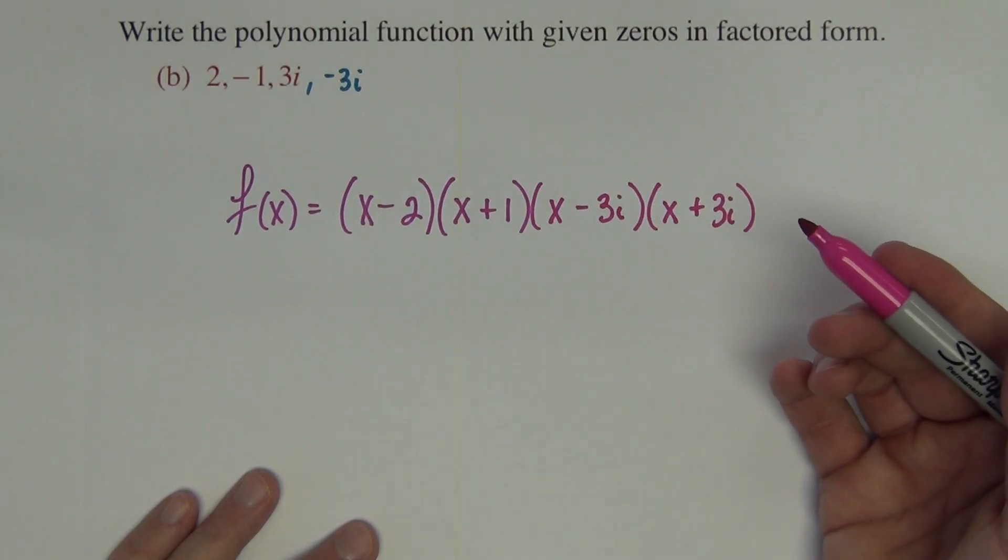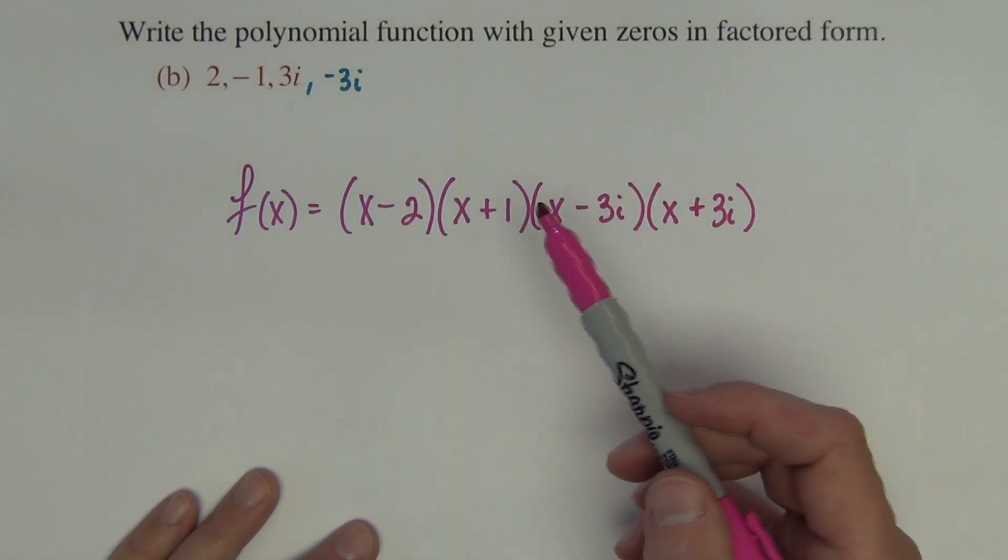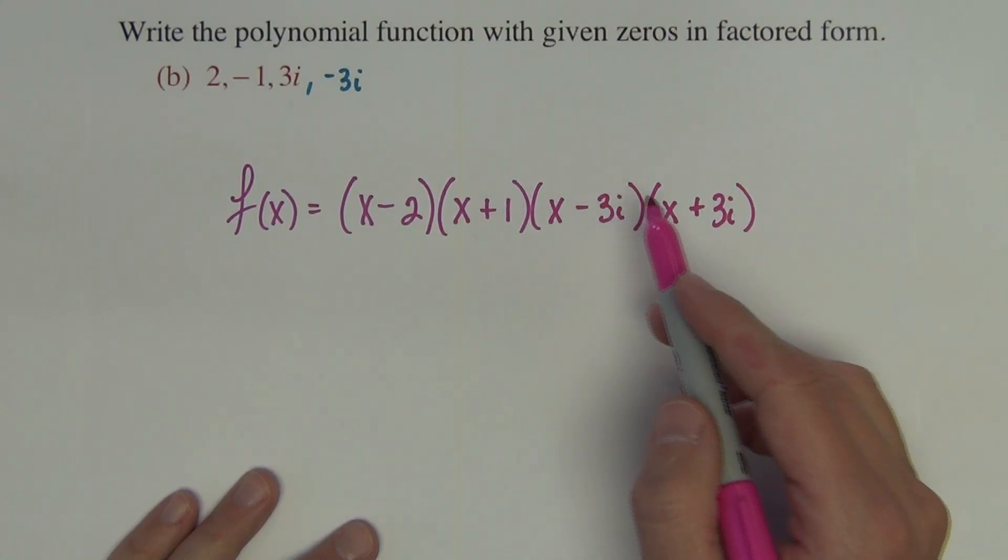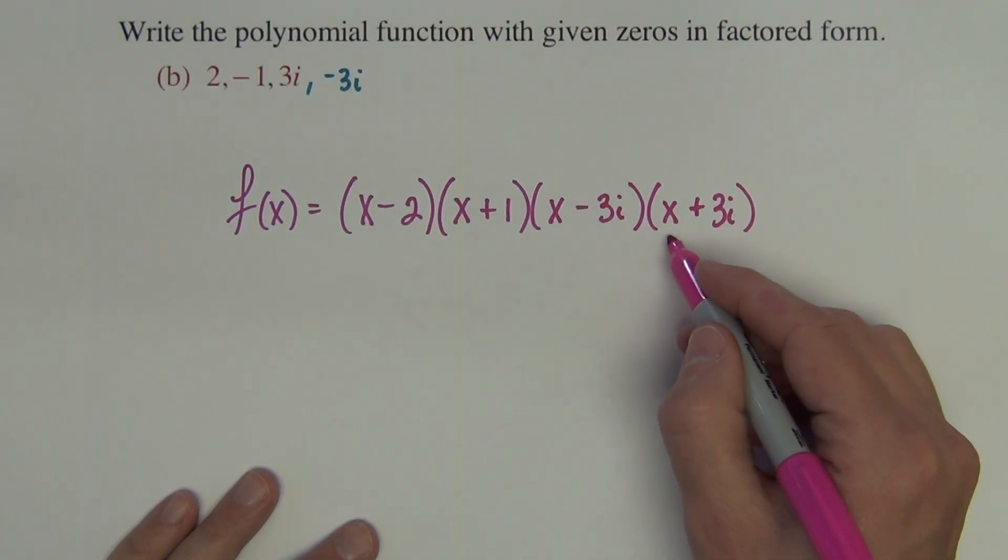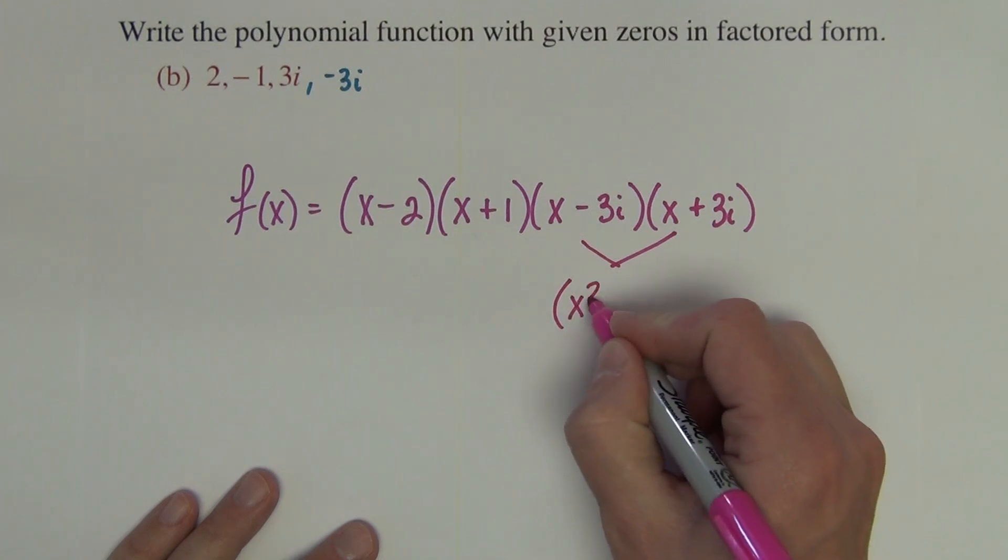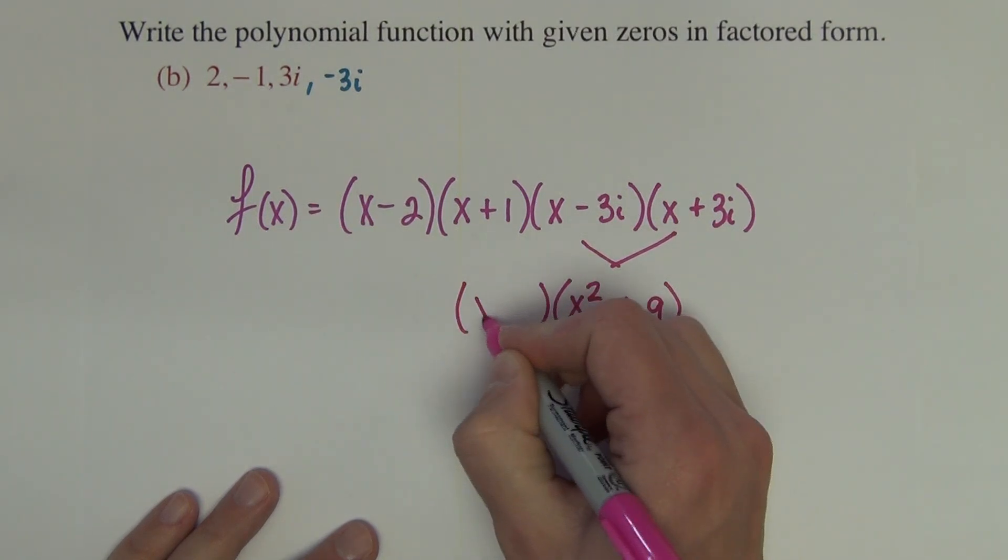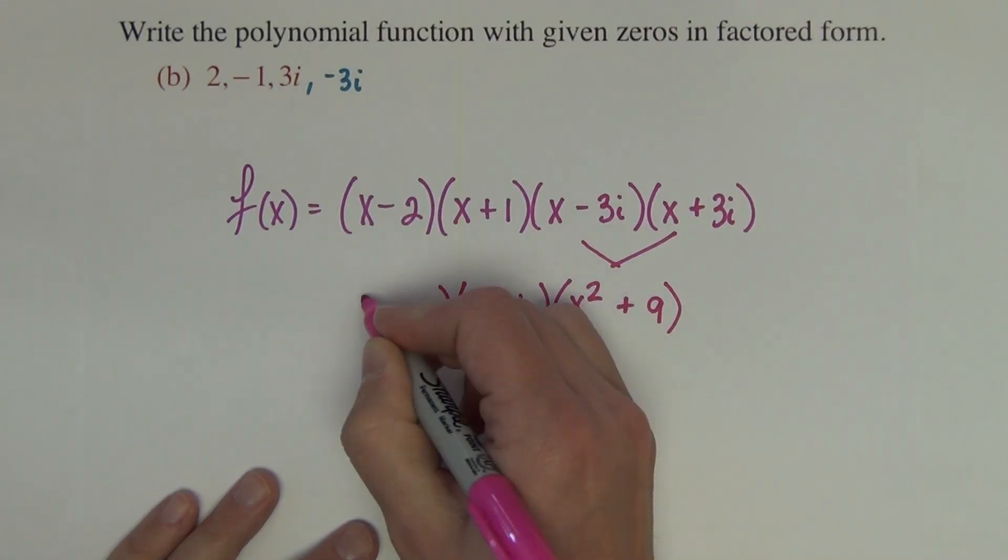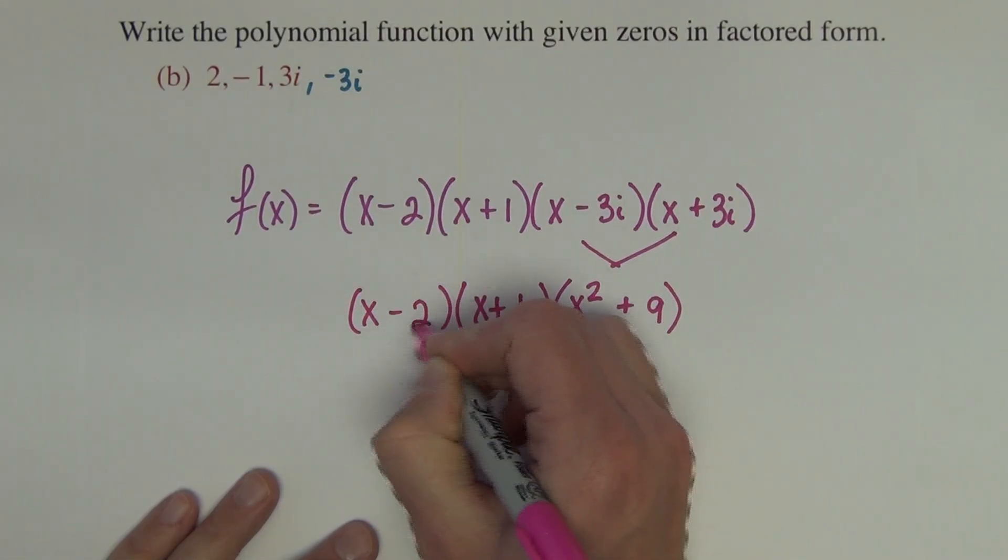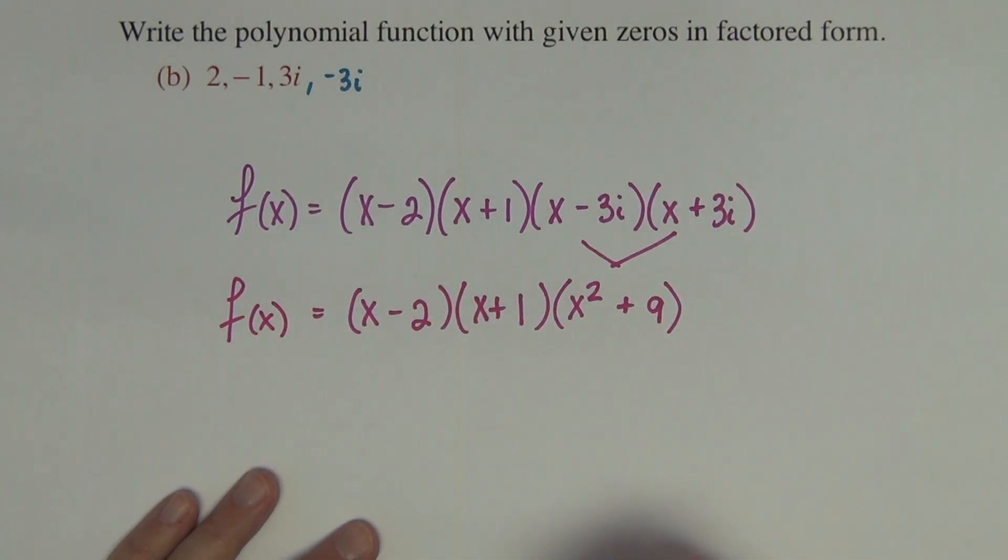Now I do not know yet because I do not recall on the final exam which type, either question A or question B, this is going to be. But if I had this, I am guessing I would probably want you to put these two together as x² plus 9. And the rest of this is all okay. And that is finished.